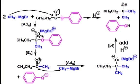The second equivalent of Grignard reagent attacks to create a new tetrahedral intermediate. Now this intermediate doesn't have a good leaving group that can facilitate beta elimination. Therefore, simple protonation then occurs to convert it to the tertiary alcohol.